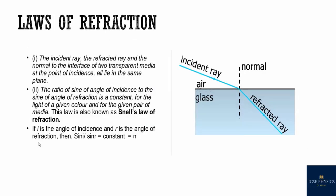Now, the laws of refraction. First: the incident ray, the refracted ray, and the normal all lie in the same plane. Second: the ratio of the sine of the angle of incidence to the sine of the angle of refraction is a constant, known as the refractive index for light of a given color and for a given pair of media. This law is also known as Snell's law of refraction. So sin i / sin r equals a constant, which is the refractive index of the second medium with respect to the first — here, glass with respect to air.